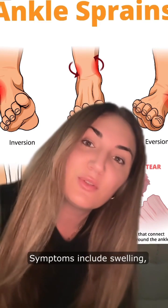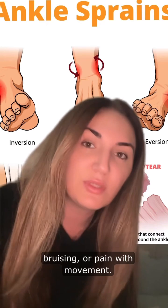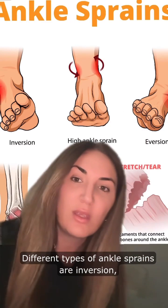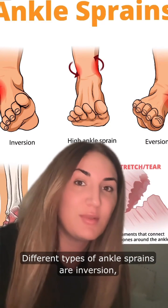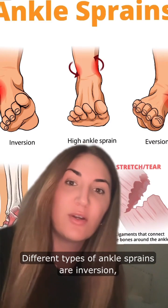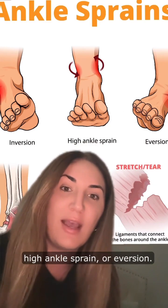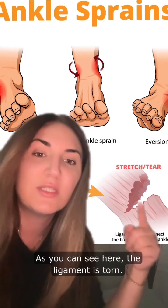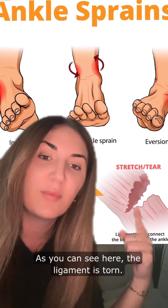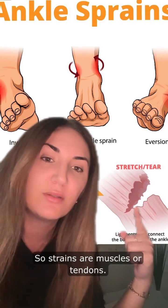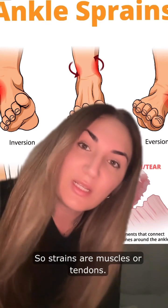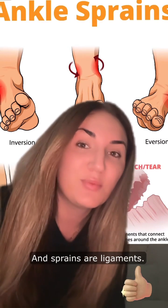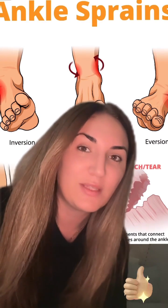Symptoms include swelling, bruising, or pain with movement. Different types of ankle sprains are inversion, high ankle sprain, or eversion. As you can see here, the ligament is torn. So strains are muscles or tendons, and sprains are ligaments.